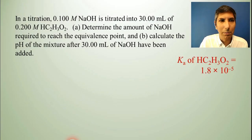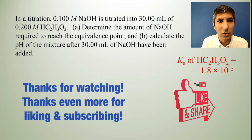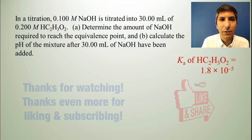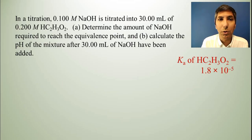So let's try a problem here. This one says, in a titration, 0.100 molar sodium hydroxide is titrated into 30 milliliters of 0.2 molar acetic acid. Part A, determine the amount of sodium hydroxide required to reach the equivalence point, and part B, calculate the pH of the mixture after 30 milliliters of sodium hydroxide have been added.